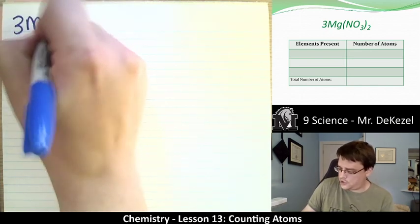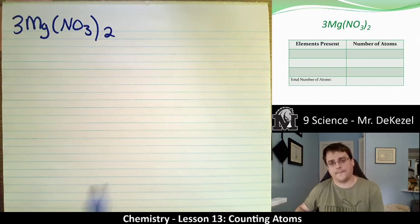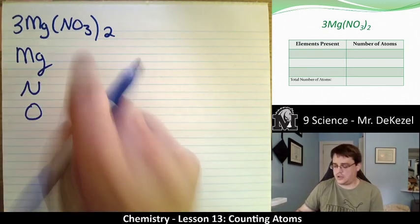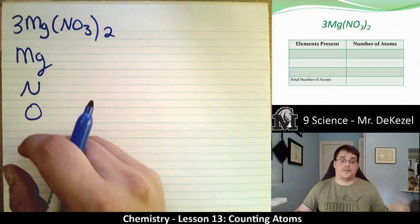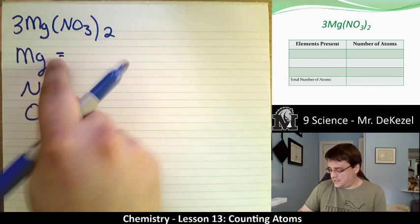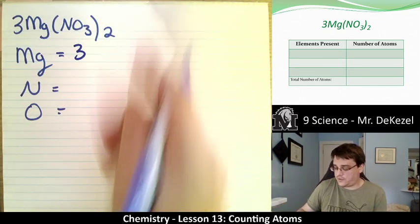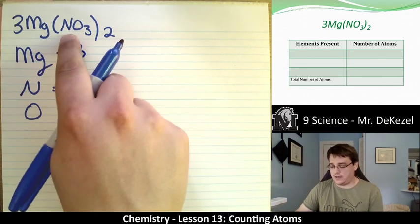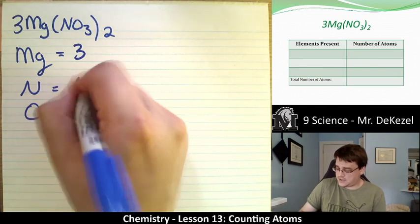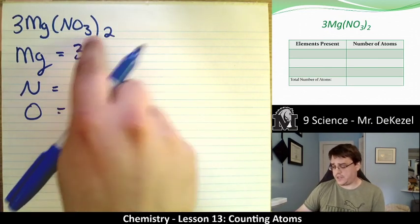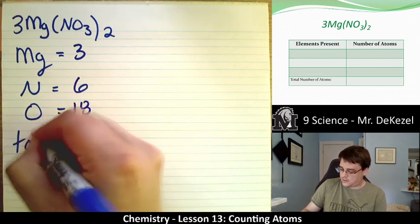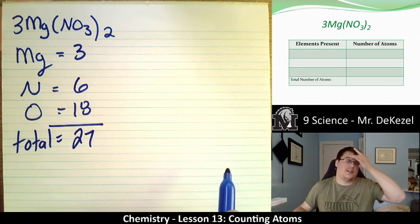We have 3Mg(NO3)2. So we have three elements here. We have magnesium, Mg, nitrogen N, and oxygen O. If at any time you want to pause these and move ahead and try a few, definitely recommend it, and then you can unpause and see if you've done them right. So we have magnesium, there's one, except we multiply it by the coefficient for a total of three. We have 1N multiplied by 2 for the bracket, so that's 2 total multiplied by 3 for the coefficient, so that's 6 nitrogens. Then we have 3 oxygens multiplied by 2 is 6, multiplied by 3 is 18, for a total of 27 atoms. So 18 oxygen, 6 nitrogen, and 3 magnesium.